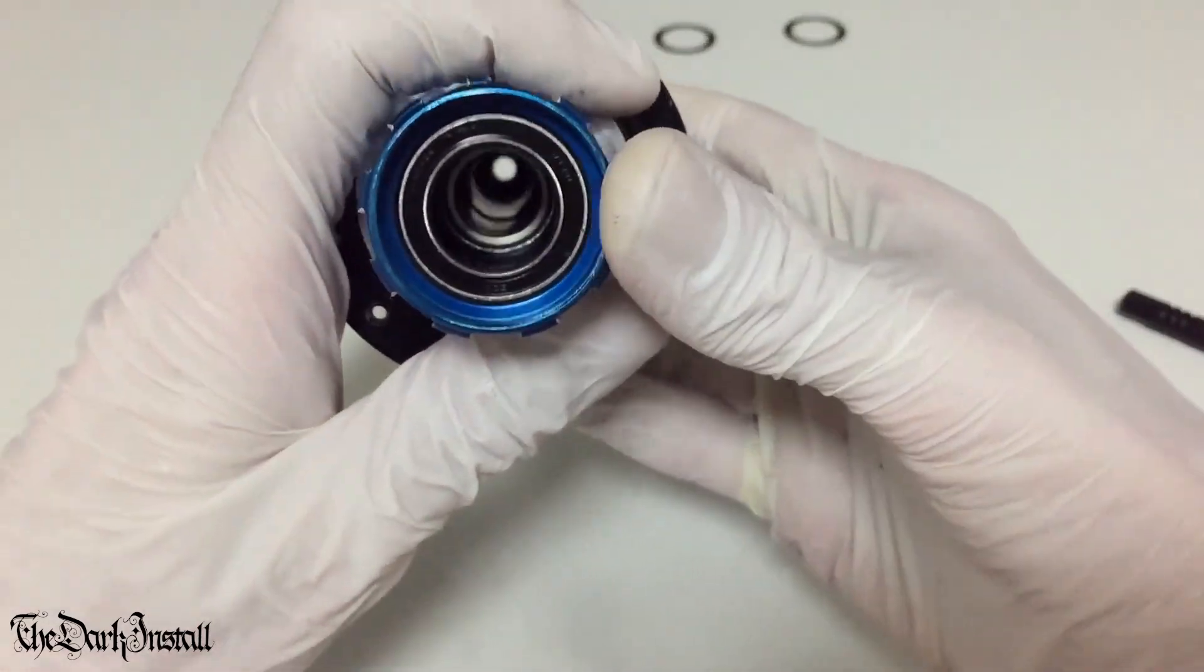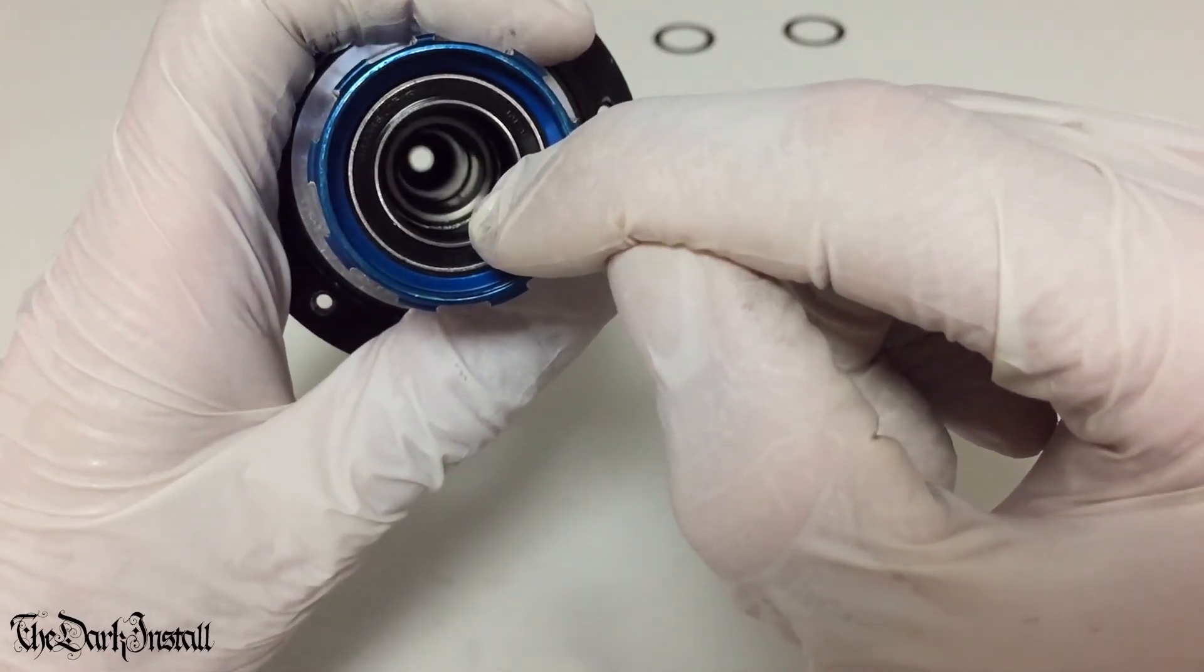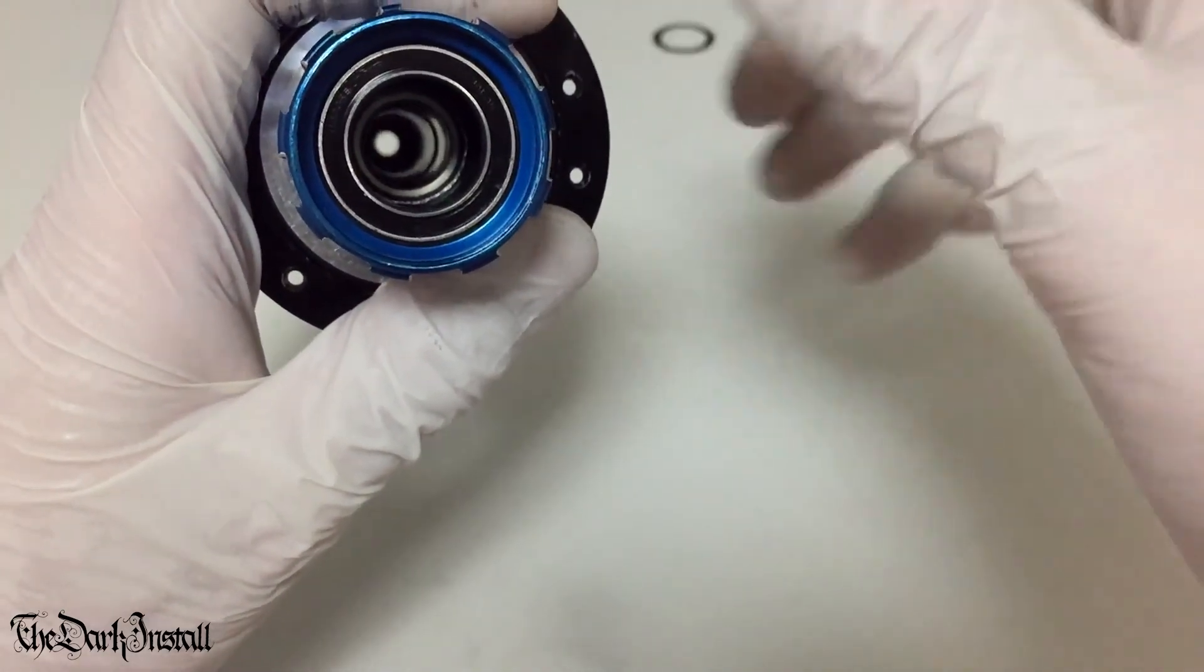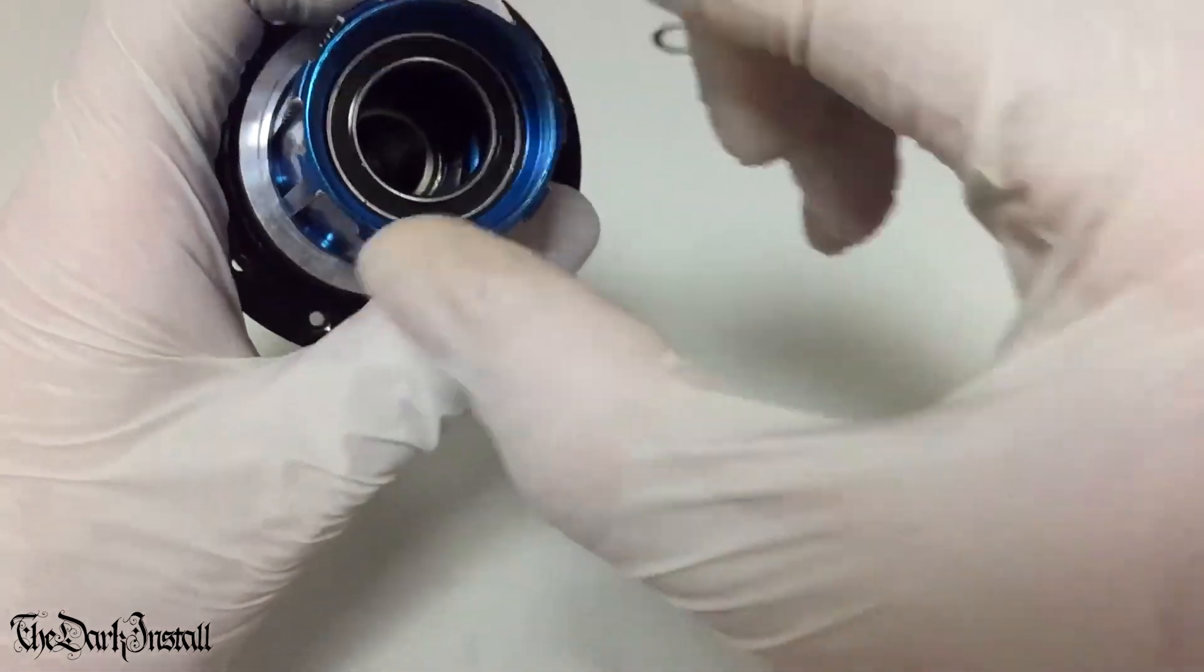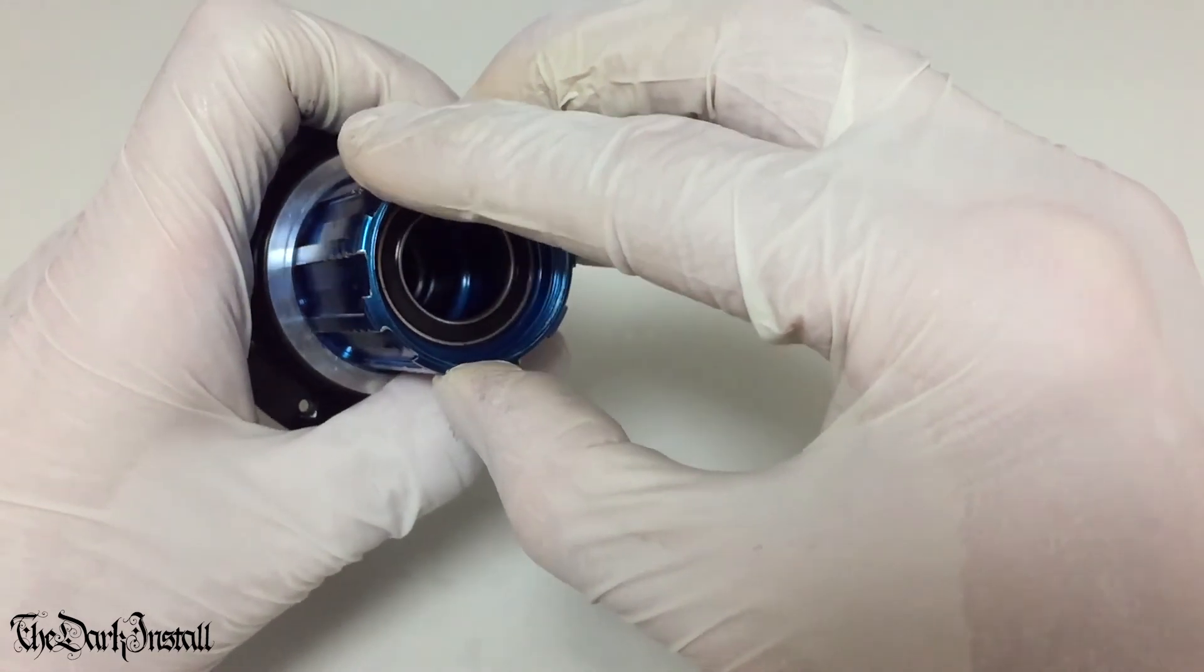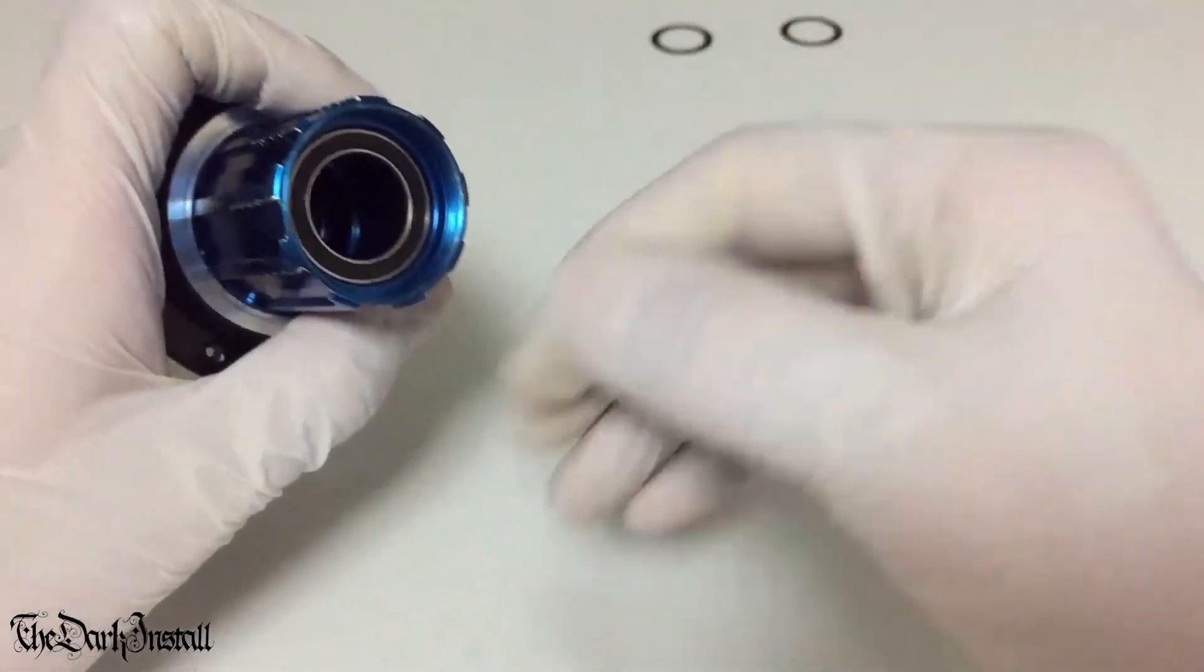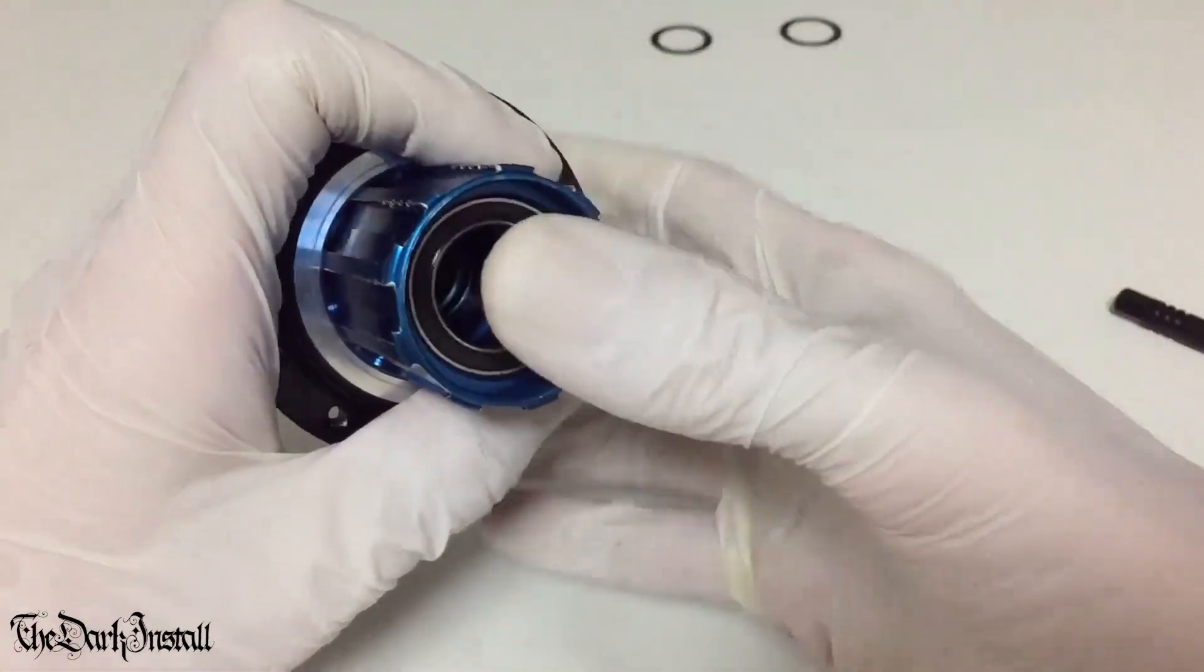Now if we look down the inside, you can see that the axle has gone into the inner race of the inside bearing on the free body. If we hold this down quite hard and turn it round, you can see that it's engaged. That's good. If you do this and you feel it's not in the right position, just take it off, reassess it, and try again.